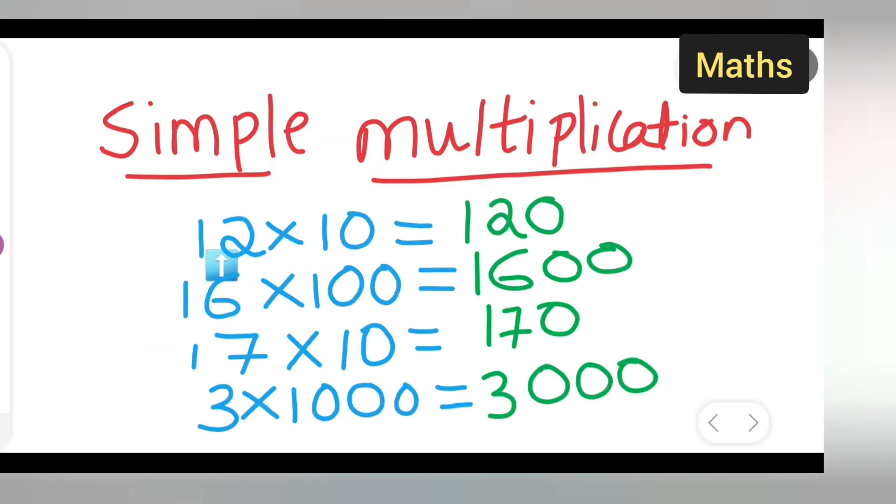Same way here also, write 12 as it is. 12 ones are 12, add a 0. 16 ones are 16, add this 0. 17 ones are 17, add this 0. 3 ones are 3, add these 3 zeros.